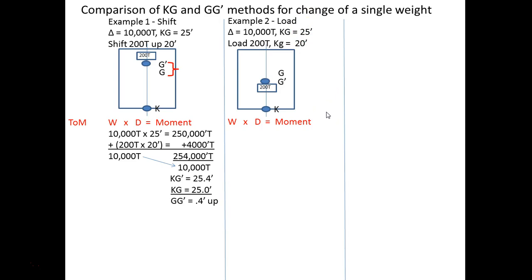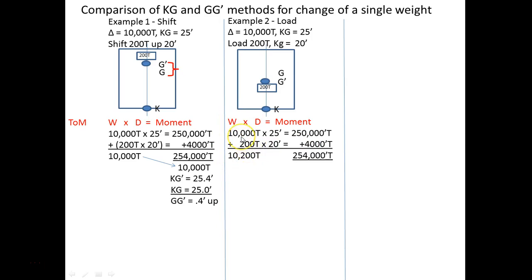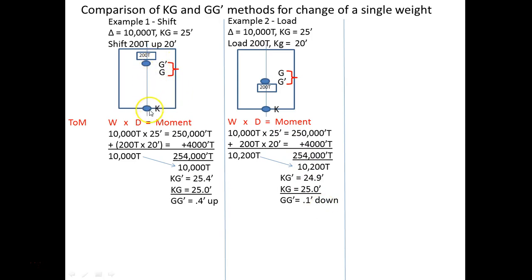Let's do the calculation. Theory of moments: 10,000 tons times 25 feet is the original moment. Now we're adding 200 tons times 20 feet — interestingly, the added moment is the same 4,000 foot-tons. But what's different is the weight: I came in with 10,000 and threw 200 tons on, so now my displacement is 10,200. Dividing the total moments by 10,200, I get a KG of 24.9. What was my original KG? 25. So it went down 0.1 feet. For all our calculations, we used the keel as the reference.